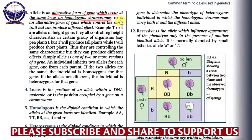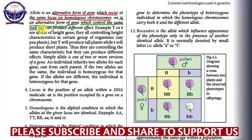Both definitions are true, but the second definition is very descriptive and can help you explain more easily. The second definition says: an allele is an alternative form of gene which controls the same trait but can produce different effects. So two alleles of the same gene are alternative forms of that gene — they control the same trait but they can produce different effects. When one allele is present, it causes a certain effect to appear, and when another allele is present, it causes a different effect to appear.